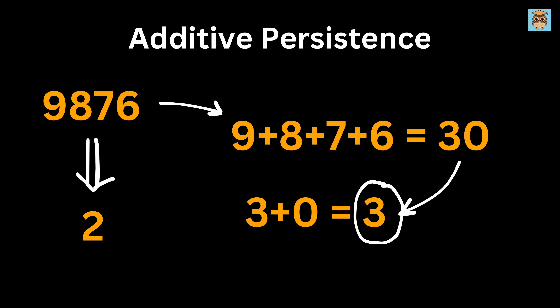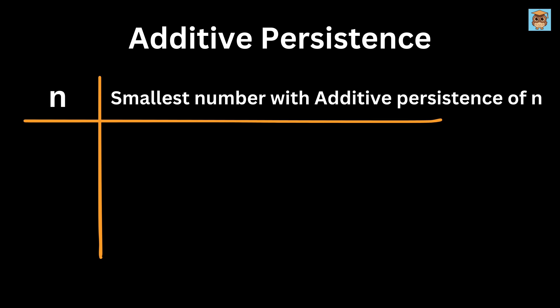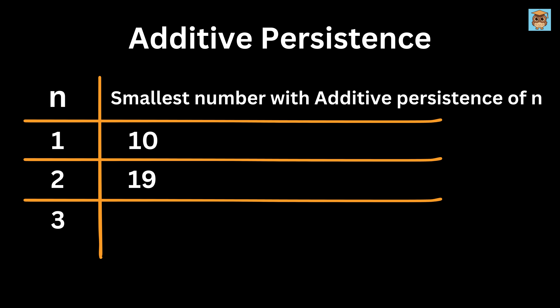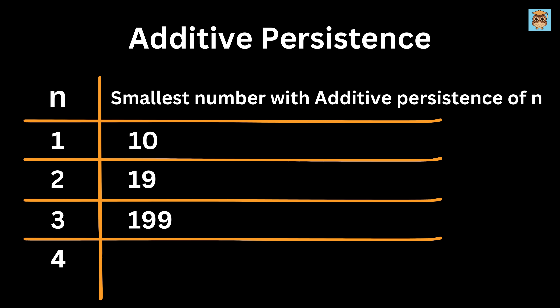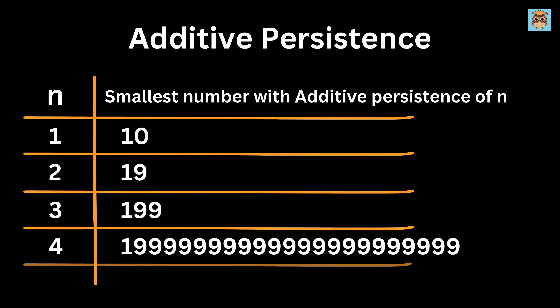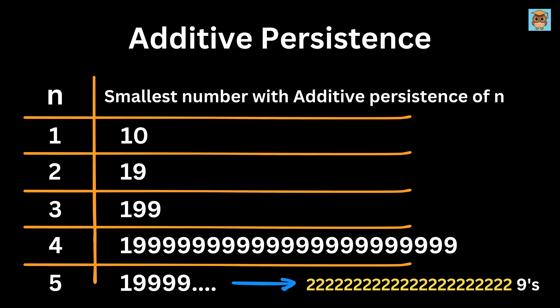Here comes the surprise. If we make a table for n and the smallest number with additive persistence of n, the smallest number with additive persistence of 1 is 10, of 2 is 19, and of 3 is 199. But here's where things blow up: the smallest number with additive persistence of 4 is 1 followed by 22 nines. And the smallest number with additive persistence of 5 is 1 followed by that many nines.